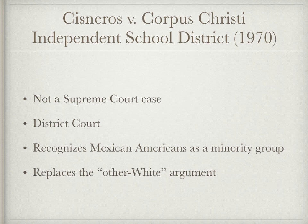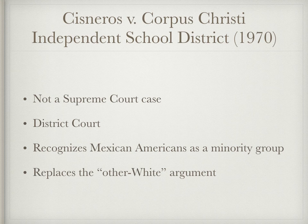The school board also lacked a majority-to-minority bussing system, meaning white students were not bussed into non-white areas. Judge Seals cited the 'other white' argument as adjacent proof of segregation, but he relied primarily on the application of unconstitutional segregation of Mexican Americans as an identifiable minority group based on physical, cultural, religious, and linguistic distinctions.